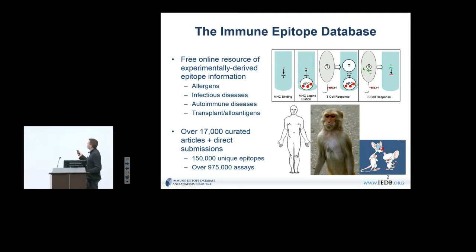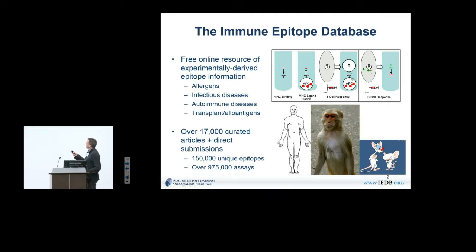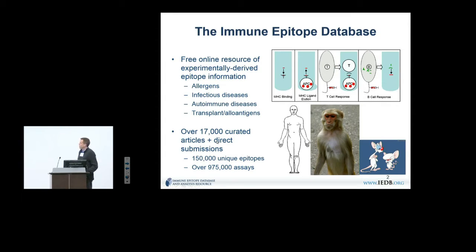We deal with both T-cell and B-cell epitopes, and also things that are not strictly epitopes, such as MHC binding assays and MHC ligand elution assays, because those are critical conditions for a peptide to be recognized as an epitope. We deal with different disease indications, assays, and hosts — essentially any host where an adaptive immune response is mounted is in scope. At this point, there are over 17,000 papers curated, plus direct submissions from NIH-funded contracts, generating 150,000 epitopes and close to a million assays.